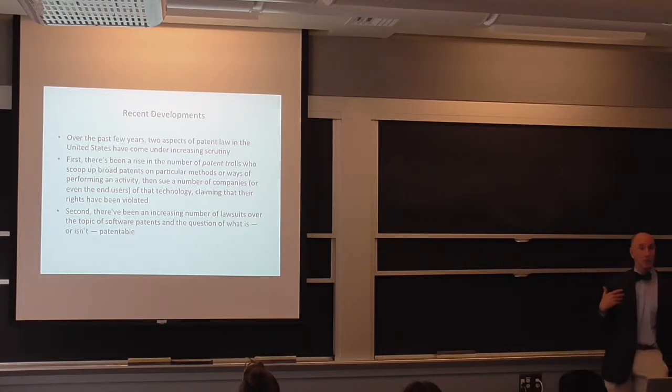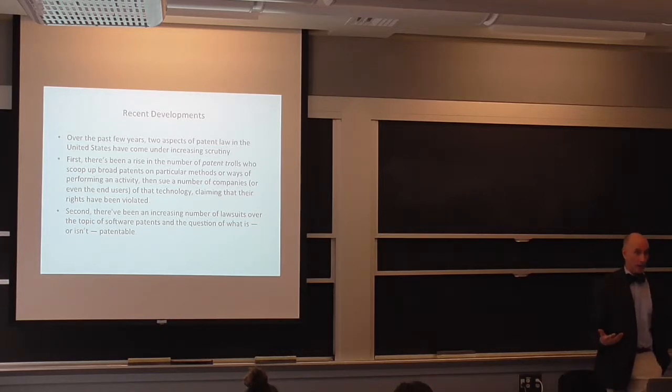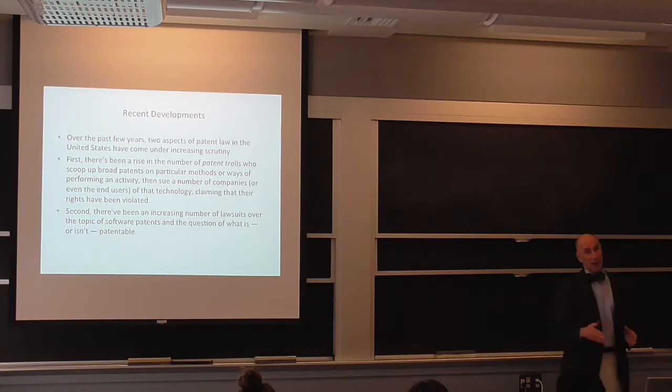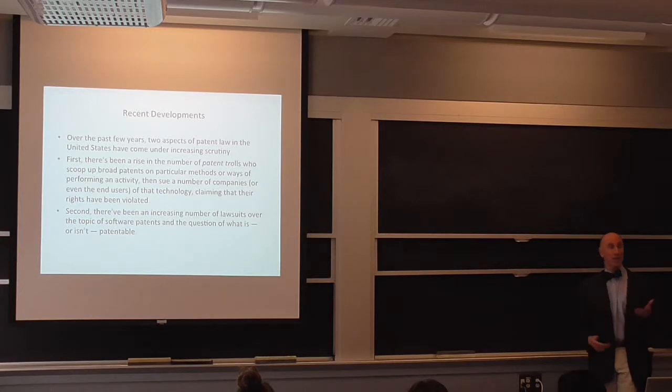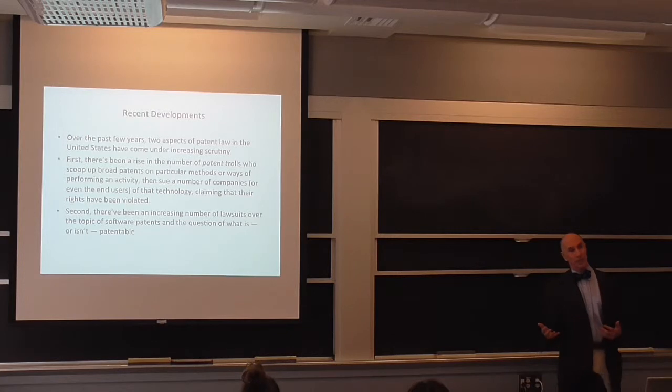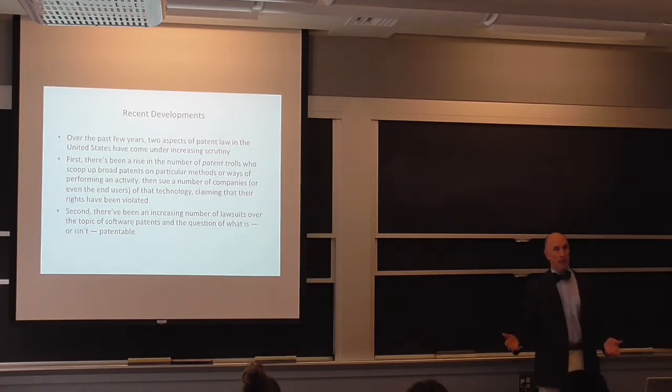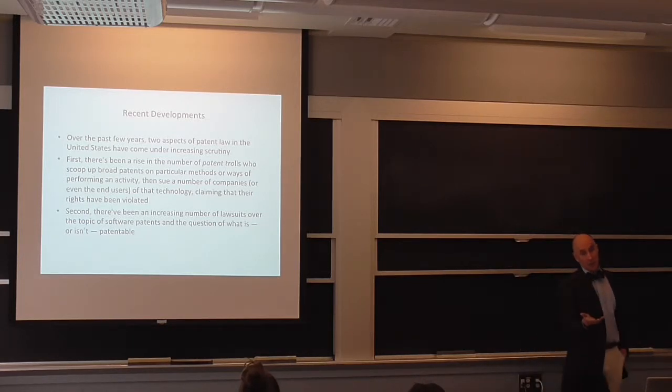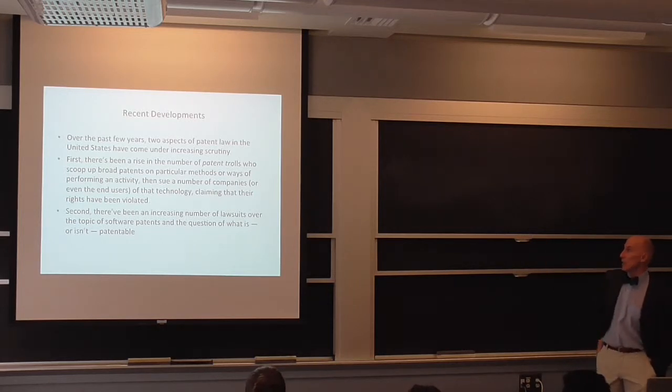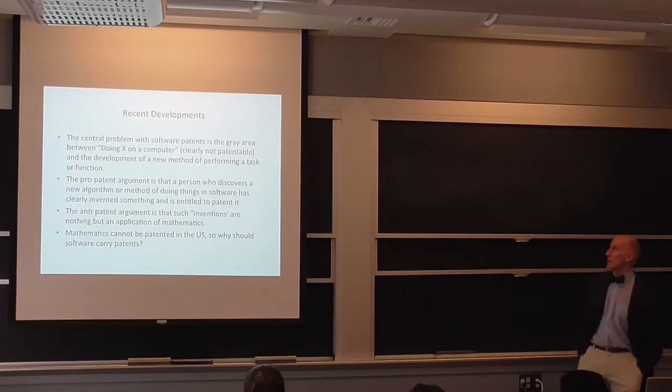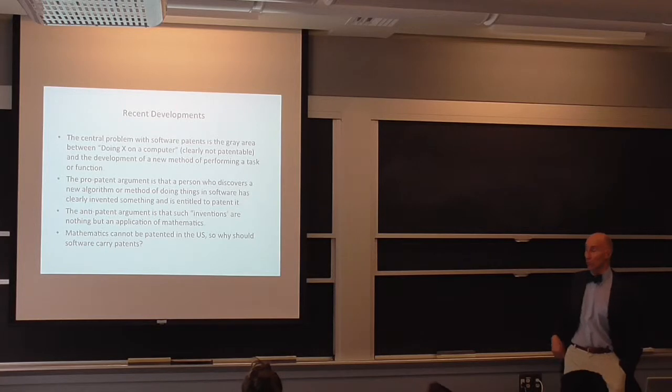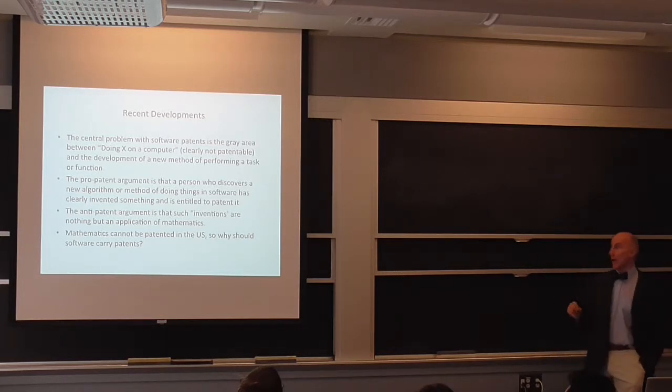The laws concerning what is patentable and what is not patentable, and the values that society wants to promote become reflected. But the problem with the system is keeping up with it is very difficult because the patent trolls are a lot faster. It's like cheating in sports. The people that come up with performance-enhancing drugs are always way out ahead of the people that enforce the anti-doping laws. And that's just a fact of life, and that's comparable to the way technology develops and the way the law develops in response. So the second thing is that there's been an increasing number of lawsuits over the topic of software patent and the question of what is and what isn't patentable.